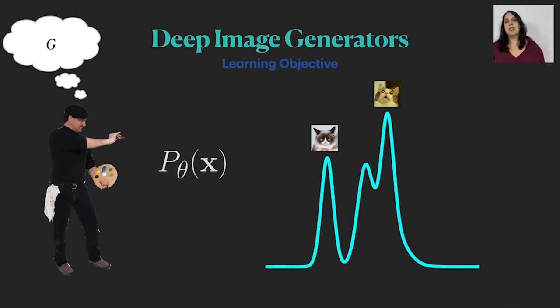The problem is that computing this probability is really hard. It requires going over all of the canvases in the world which is not very practical. Each type of image generator has a different approach to handle this issue.